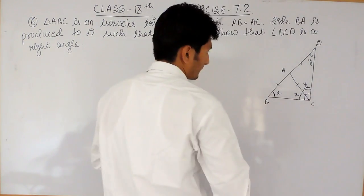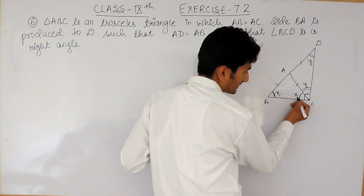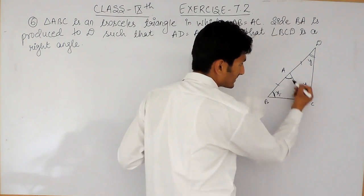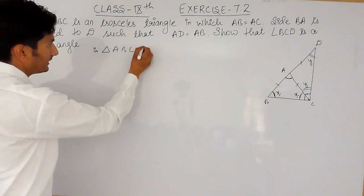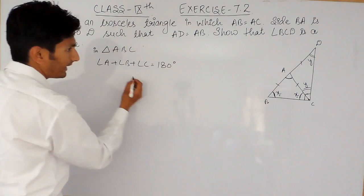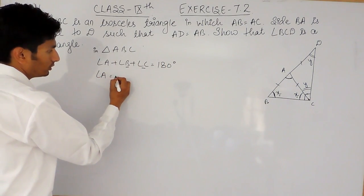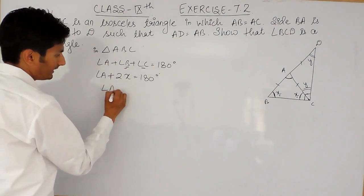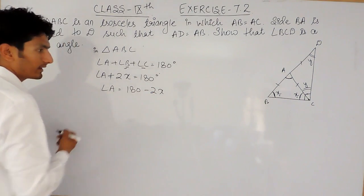In triangle ABC, if the base angles are both X, then the sum of all angles must be 180 degrees. So angle A plus angle B plus angle C equals 180 degrees, and since angle B and angle C are each X, we get angle A plus 2X equals 180 degrees. Therefore angle BAC equals 180 minus 2X.